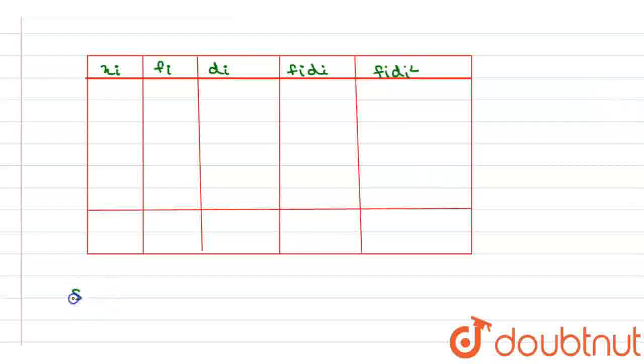Basically we know that standard deviation equals under root: summation of f_i*d_i square divided by capital N minus summation of f_i*d_i whole square divided by N square.